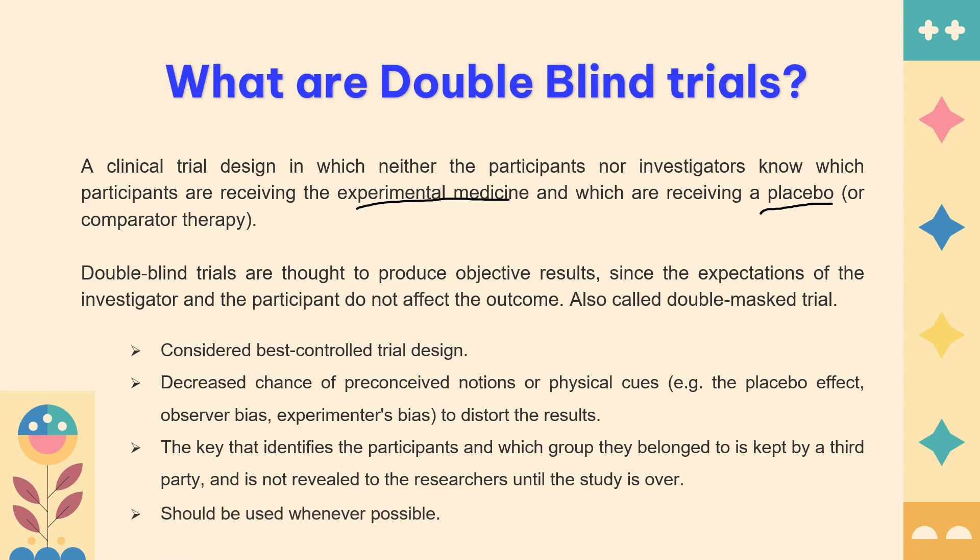Wherever possible, double blinding must be used to avoid all kinds of bias and ensure the trial does not have any distorted effects on the final trial outcome.